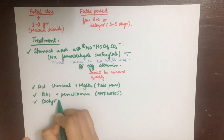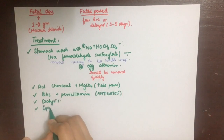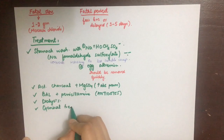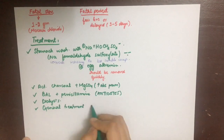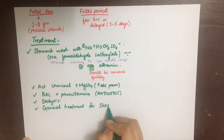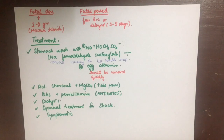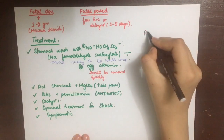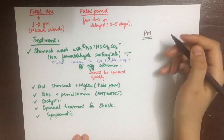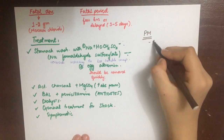British anti-lewisite (BAL) agent and penicillamine are used as antidotes. Dialysis for the kidneys — both peritoneal and hemodialysis — can be used, along with general treatment for shock and symptomatic management.